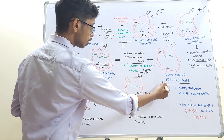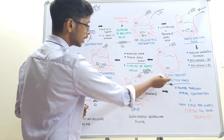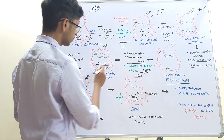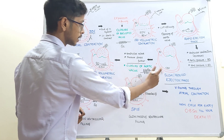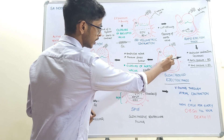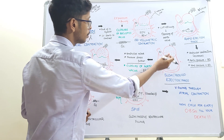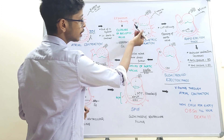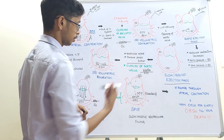This is the stage of end systole. The systole has stopped and the ventricle starts relaxing. The volume of blood remaining in the ventricle at this point is called the end systolic volume. The volume of blood pumped into the aorta is called the stroke volume.